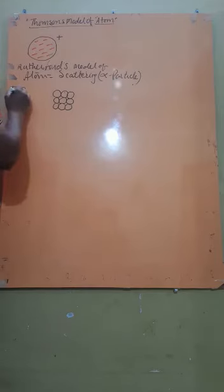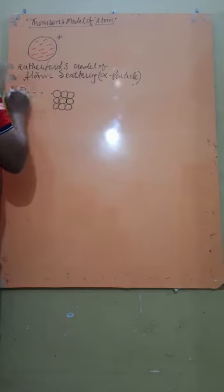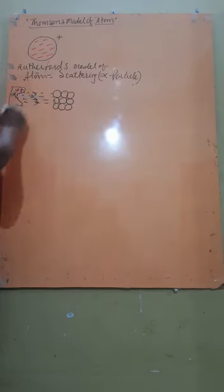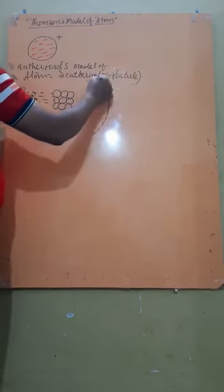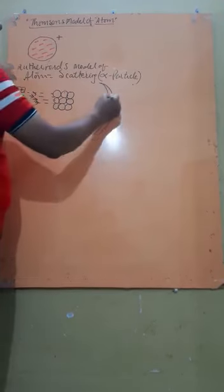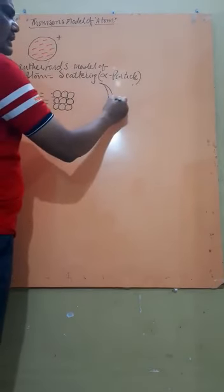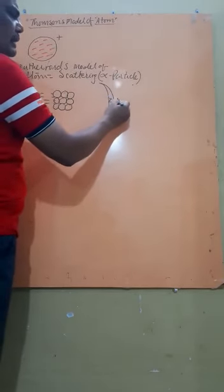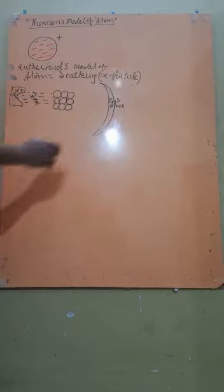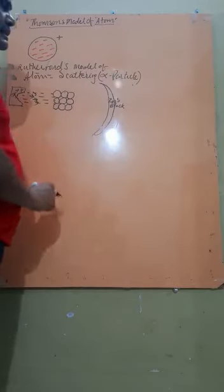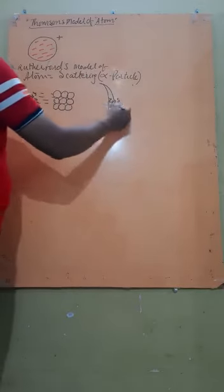So when he passes the alpha particle through an atom, the alpha particle travels in a straight line. On the other side of the experiment there is a ZNS screen. The ZNS screen is black in color — when anything strikes it, it starts to glow. To observe whether the alpha particle strikes here or not, the ZNS black screen is used.